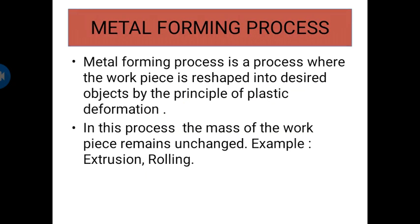The first chapter of Production Technology is Metal Forming Process. Metal forming process is a process where the workpiece is reshaped into desired objects by the principle of Plastic Deformation. Plastic Deformation is a process where the body does not regain its original shape once the load is removed.